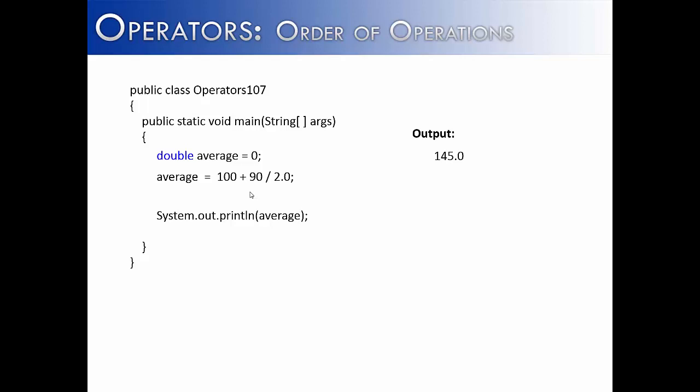The value that it would give us would be 145. The reason is division happens before addition and so 90 divided by 2 would be 45.0 and then we would add 100 to that, which would give us 145. If we did want to do it correctly, we'd have to add parentheses around the 100 plus 90 and then divide by 2 and the answer would be 95. So we would do 100 plus 90 first and then divided by 2, which would be 95.